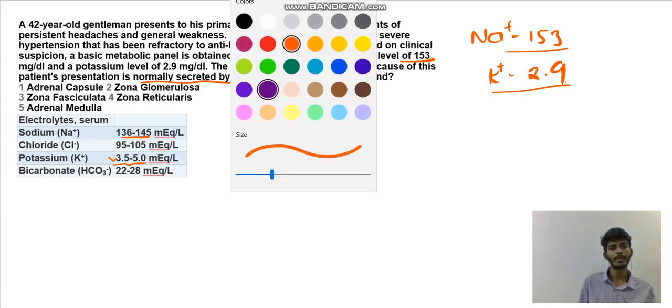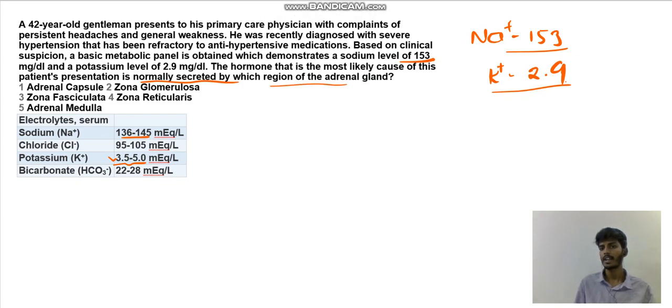If the patient is having a potassium level of 2.9, that indicates hypokalemia. So the patient's blood potassium levels have been decreased. What else? Next, sodium - the sodium level is 153.